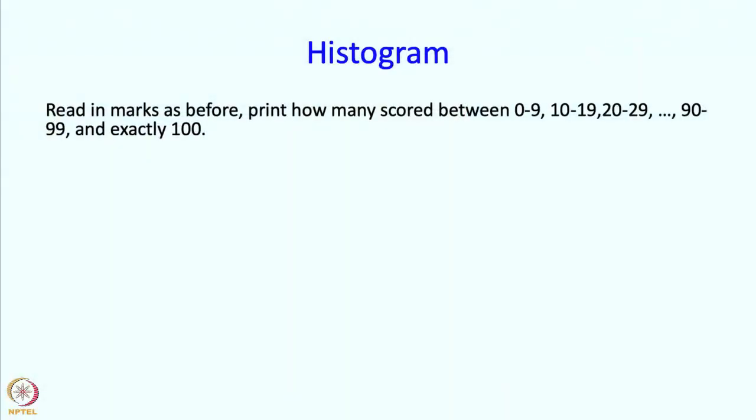This example that we are going to do is rather interesting. It shows some clever ways in which the array index can be used. The problem is that we are supposed to read in marks as before, but we should print how many students scored between 0 and 9, 10 and 19, 20 and 29, and so on.